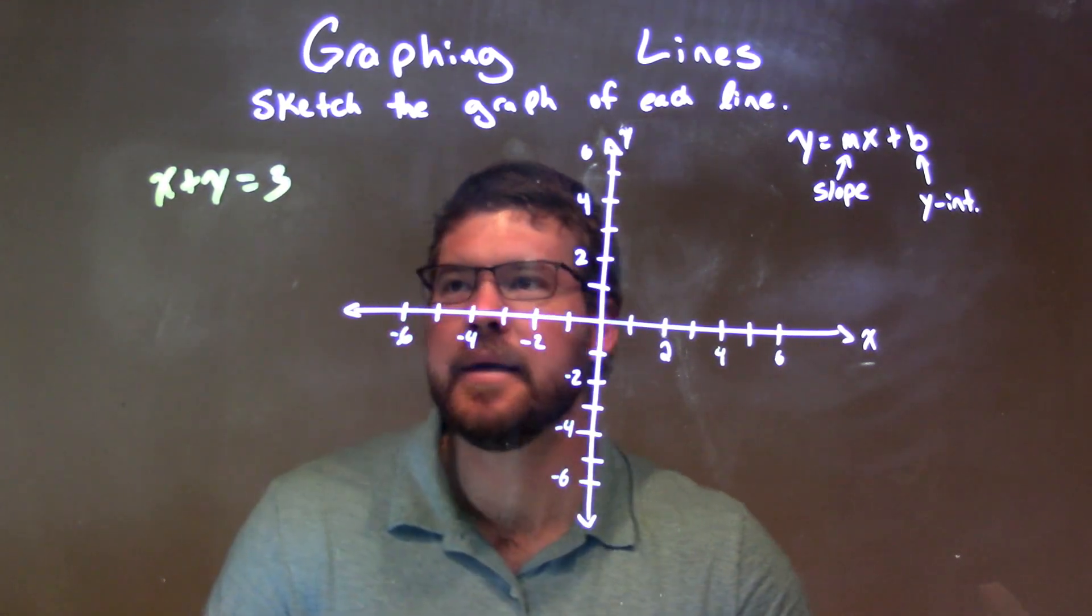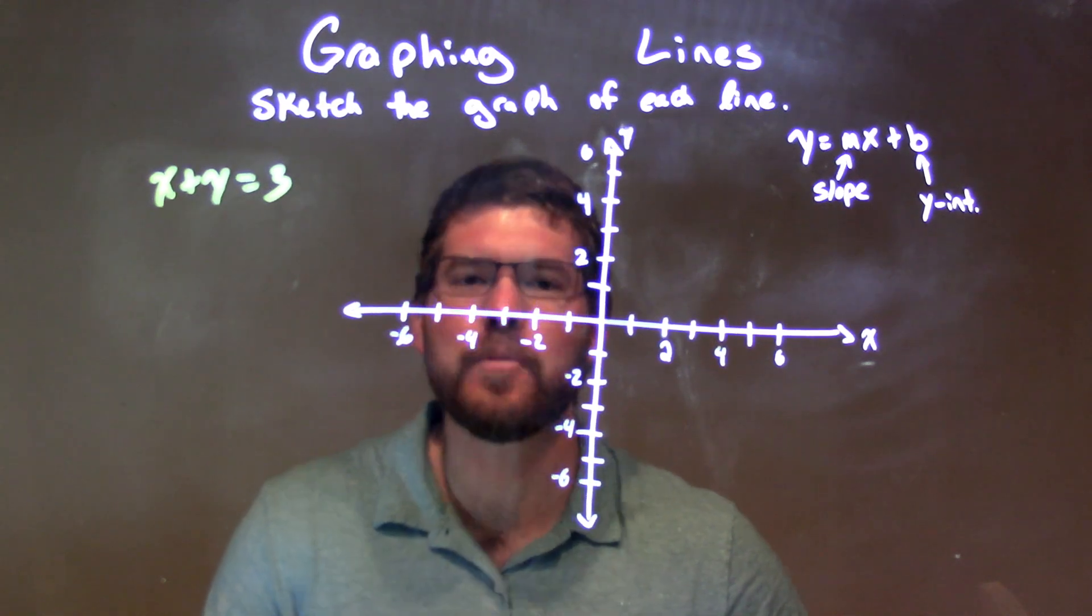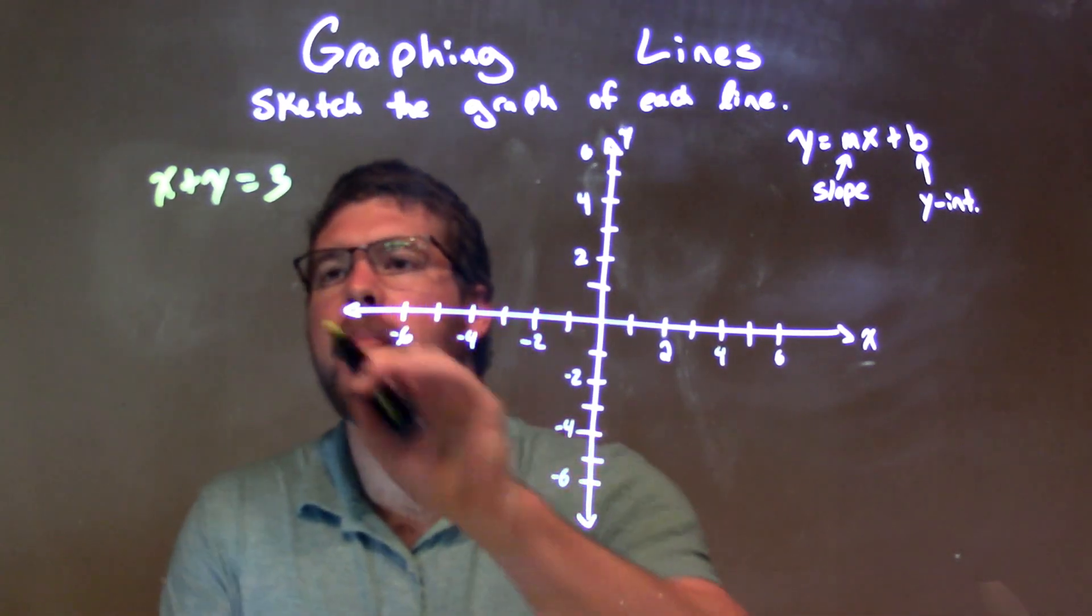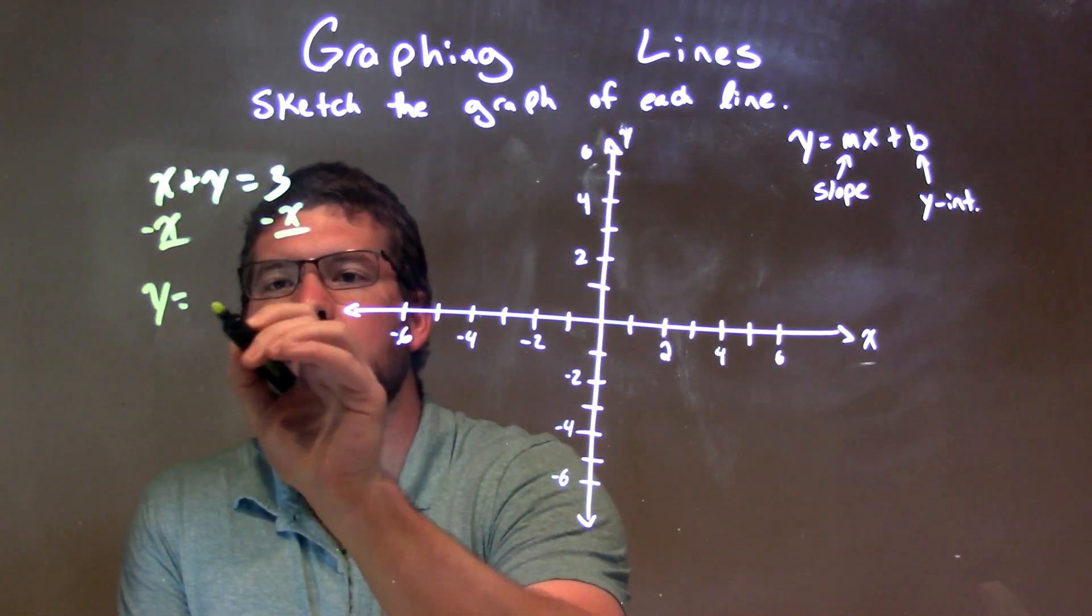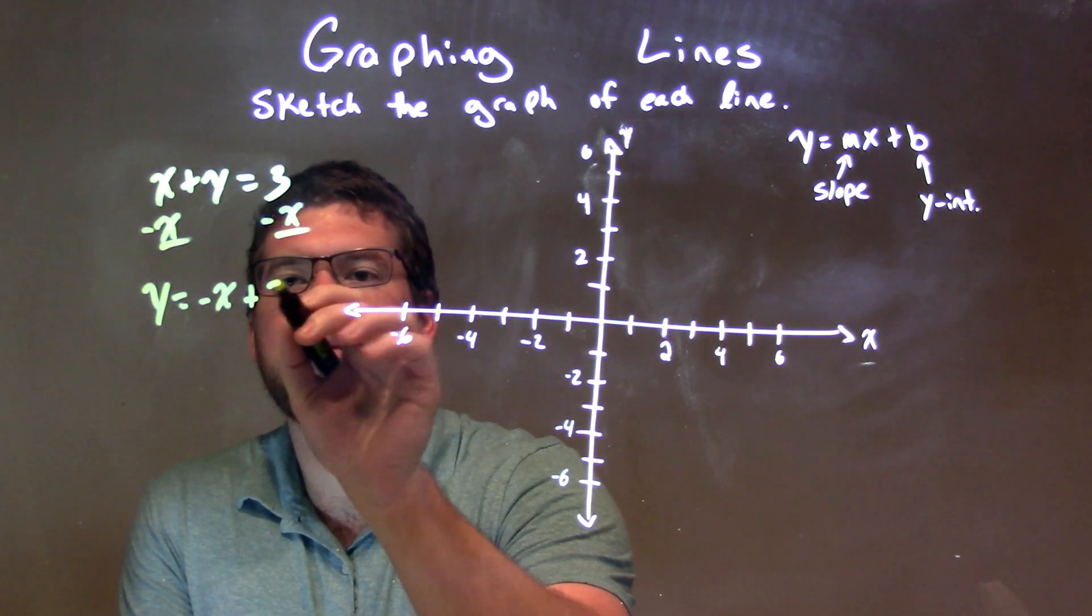Well, from there, what I need to do is I like to get it from standard form to slope-intercept form. I'm going to subtract x from both sides to get that y by itself. So we have y equals negative x plus 3.